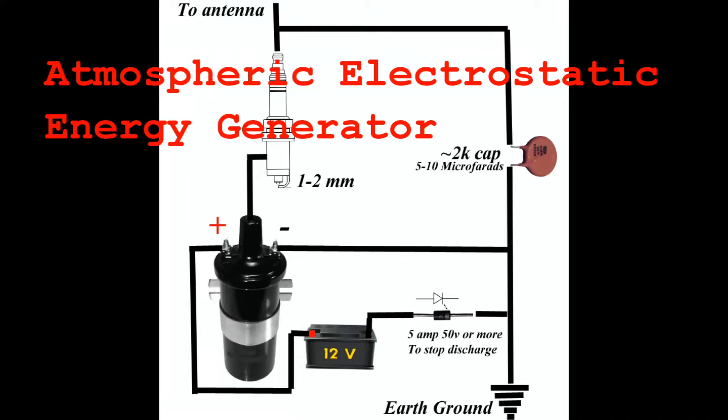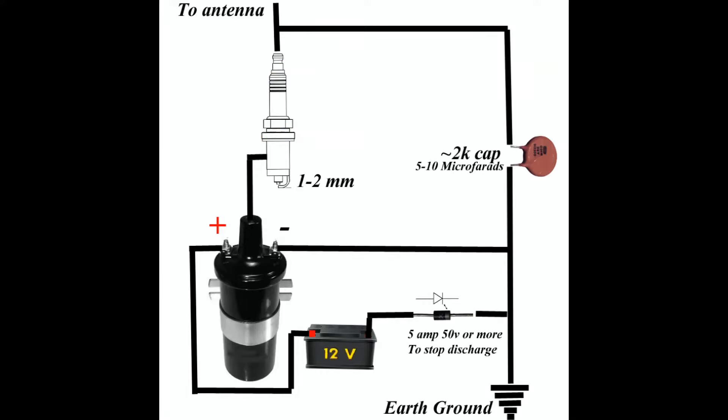Good morning YouTube, this is North Carolina Prepper. I wanted to go over a project I was looking into. Originally this was by Nikola Tesla and it was called the radiant energy detector. Well, we're calling it something else.